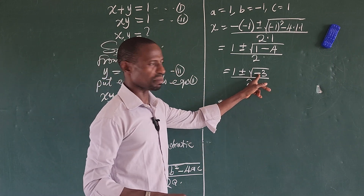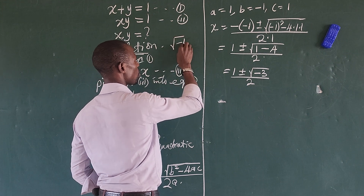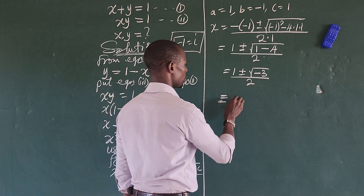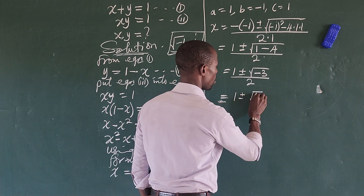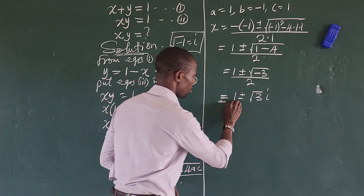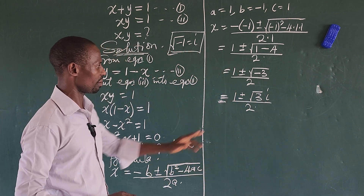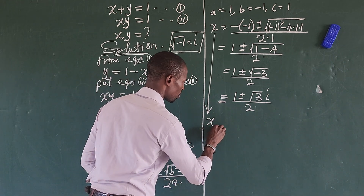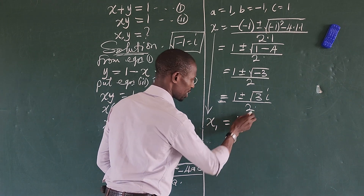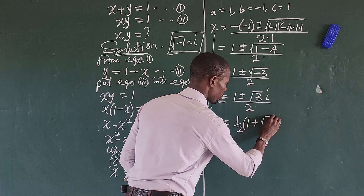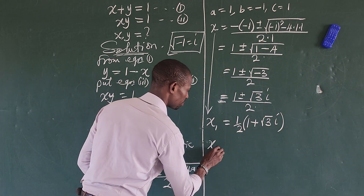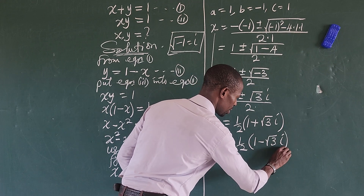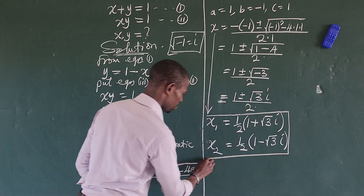We can rewrite minus 3 as minus 1 times 3. We know that the square root of minus 1 equals iota (i), so we bring iota into the system. This gives us 1 plus or minus the square root of 3 times iota, all over 2. So we have two solutions: x₁ equals one-half times bracket 1 plus square root of 3 iota close bracket, and x₂ equals one-half times bracket 1 minus square root of 3 iota close bracket.